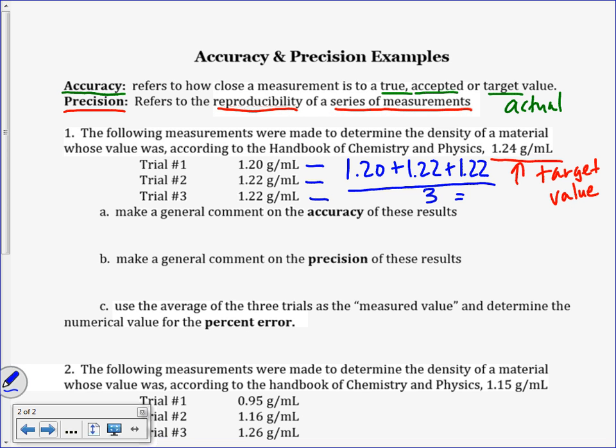What do we get for our average here? 1.21. Each one of these measured values has three significant figures, so we're going to leave it at three. Don't forget your unit, grams per milliliter. We don't want any naked numbers without units. Now I have a general number to compare here.